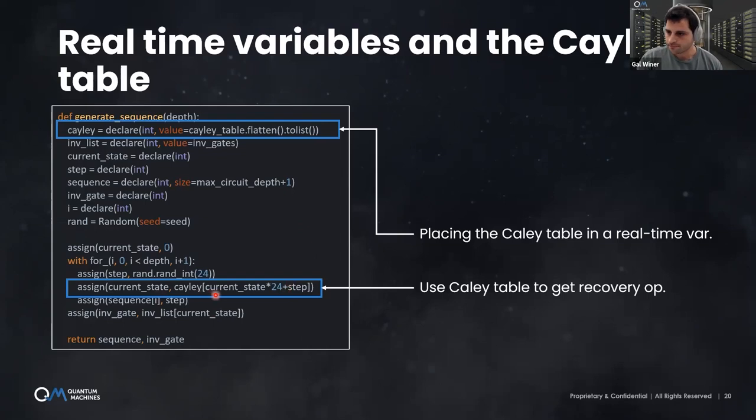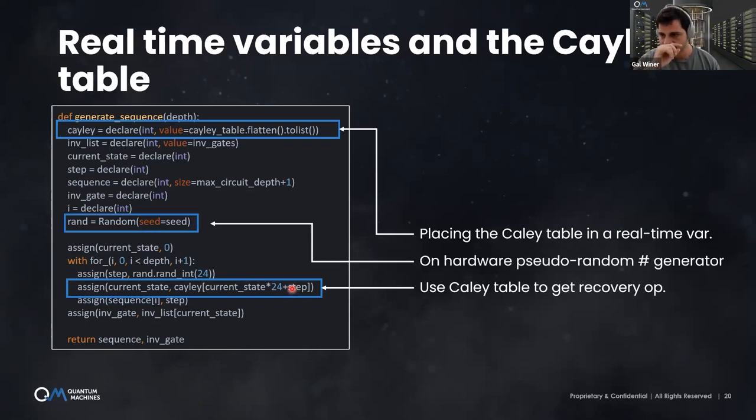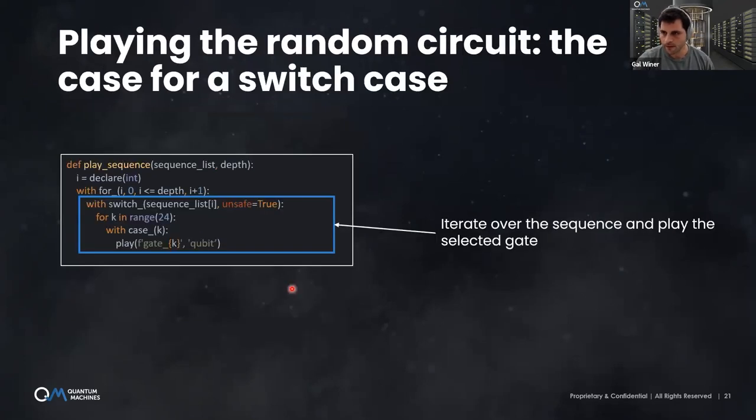Once the circuit is generated, you also know which recovery gate is needed. The next step here is to append the recovery gate to the list of operations. Because QUA supports lists (I mean arrays, vectors) at real time, you can do that very nicely. I mean, you just kind of access a vector as you would in, say, Python. Then what you do is you play the generated circuit. Finally, at the end, what you do is measure the reflected signal, get the qubit state and move on.